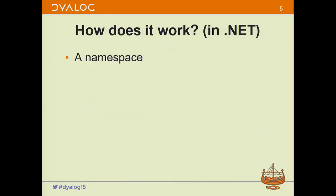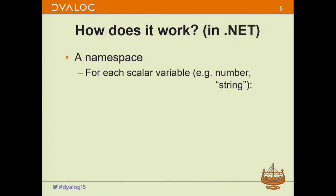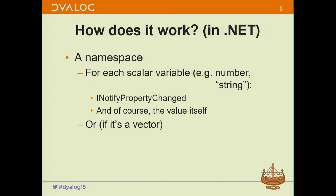If we data bind to a namespace in the workspace, the interpreter enumerates through all of the named members in that namespace. If it's a scalar variable — a string, a number, or a .NET object — then we do the NotifyPropertyChanged and provide an interface to get the value of the data. But if the value of the variable in the namespace is a vector, then we implement iList, iCollection, and iEnumerable, exactly as we would have done if you'd bound to the vector directly.